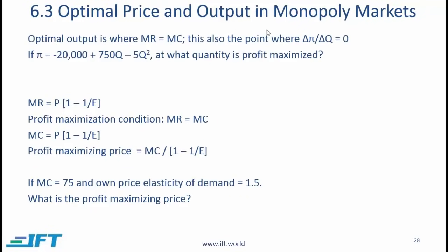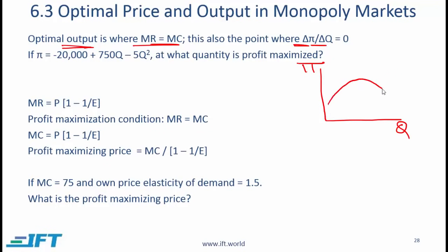Optimal price and output in monopoly markets. As we've just seen, the optimal output is when marginal revenue equals marginal cost. This is also the point where the change in profit over change in quantity equals zero. Looking at a profit versus quantity graph — profit rises to a certain level and then starts coming down — where the profit is maximum, the change in profit over change in quantity at that point is equal to zero.